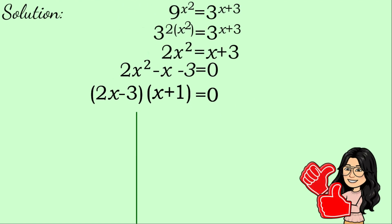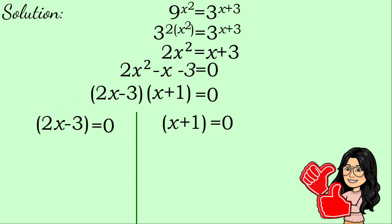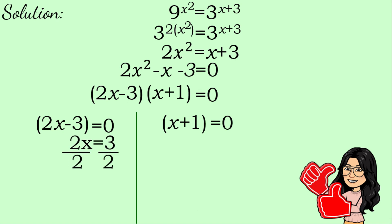Going back, now we know how we arrived at these factors. We equate each factor to 0: 2x minus 3 equals 0, and x plus 1 equals 0. Solving the first one — we add 3 to both sides to get 2x equals 3, then divide both sides by 2. The value of x here is 3 over 2.